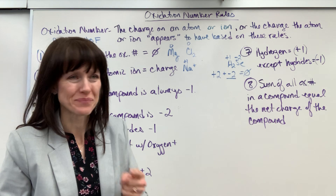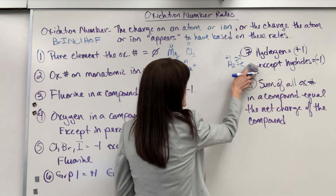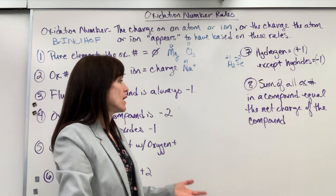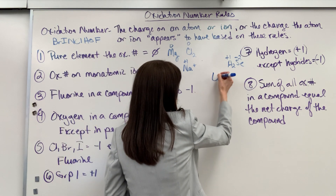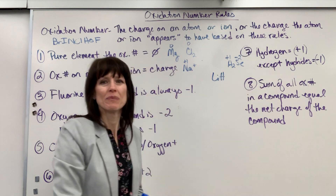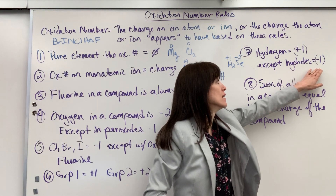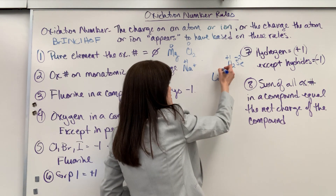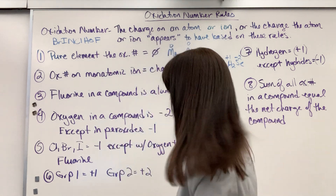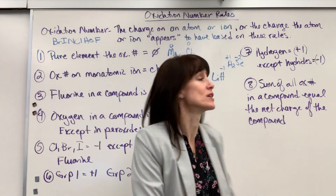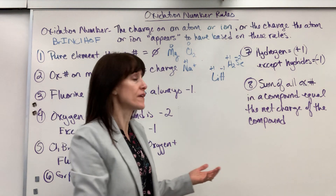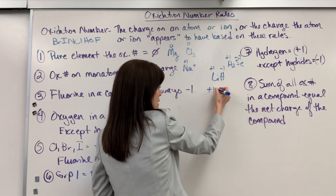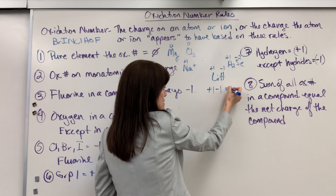The exception — hydrides — is when hydrogen is bonded with a metal, in which case hydrogen is minus one. For example, lithium hydride (LiH): hydrogen is minus one, and lithium is a group one metal so it has a plus one charge. One lithium times plus one, plus one hydrogen times minus one: plus one plus minus one equals zero. That checks out.